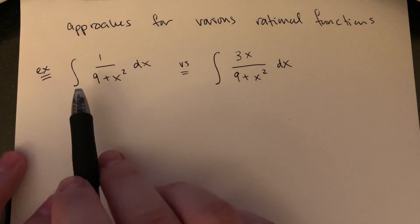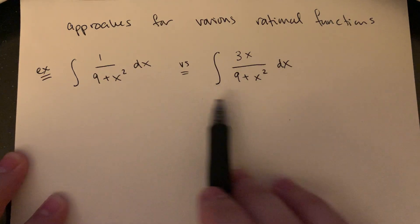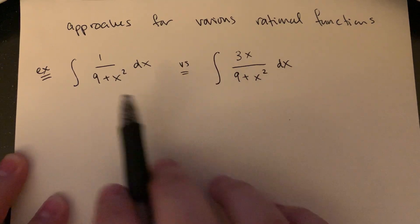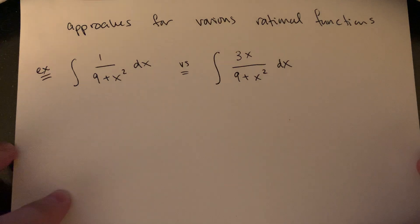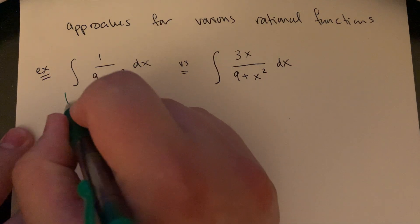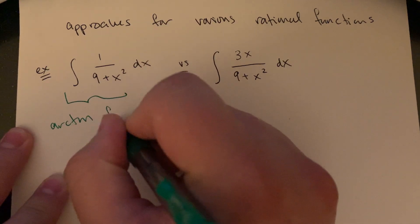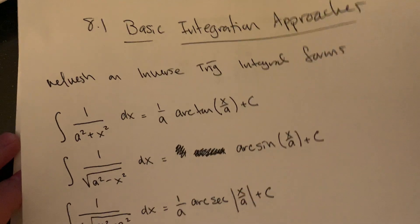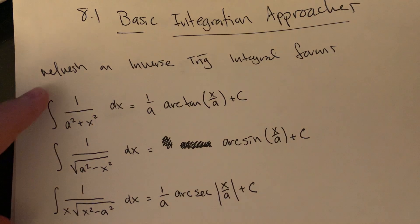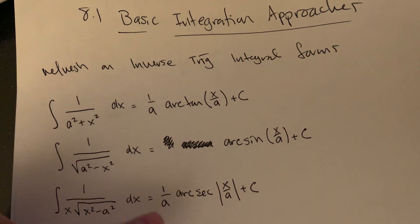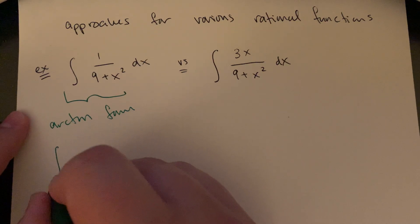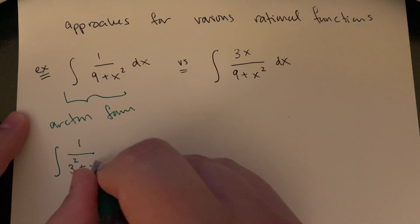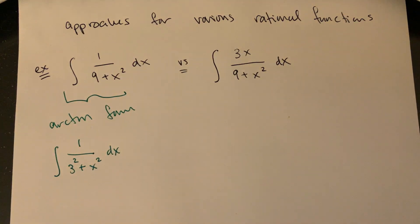The two I want to compare are the integral of one over nine plus x squared dx versus the integral of three x over nine plus x squared dx — same denominator, just different numerators. What I've changed is the degree of the polynomial on top. The first form fits the integration form for arctan: the integral of one over a squared plus x squared equals one over a times arctan of x over a. This first one fits that setup perfectly — rewriting nine as three squared.